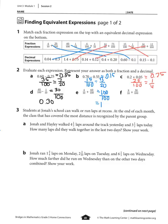Part f: 9 tenths plus 30 hundredths. 9 tenths is the same as 90 hundredths, and 90 hundredths plus 30 hundredths equals 120 hundredths. That's an improper fraction because the numerator is larger than the denominator, so as a mixed number that would be 1 and 1 fifth. As a decimal, 1 and 1 fifth is 1 and 20 hundredths, or 1.20.